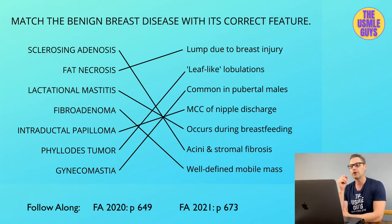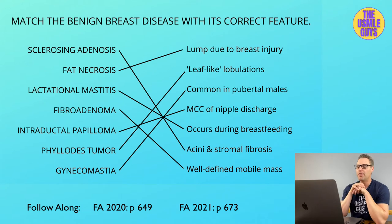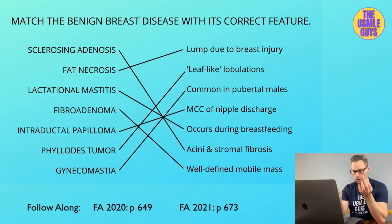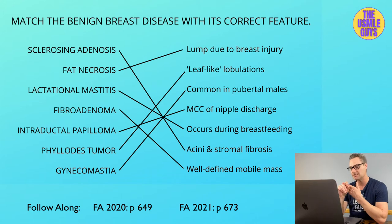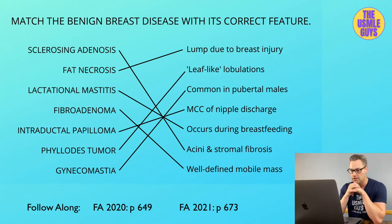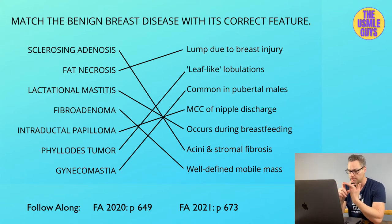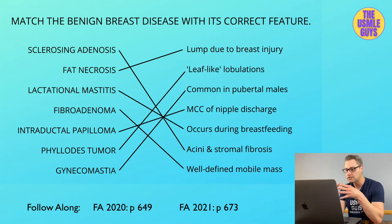The last benign lesion we're going to cover is gynecomastia — when breast tissue in a male enlarges as a result of increased estrogen activity. This can be physiologically normal in newborns, adolescents, and elderly men. Non-physiologic causes include cirrhosis of the liver, hypogonadism, tumors of the testicles, as well as certain drugs.